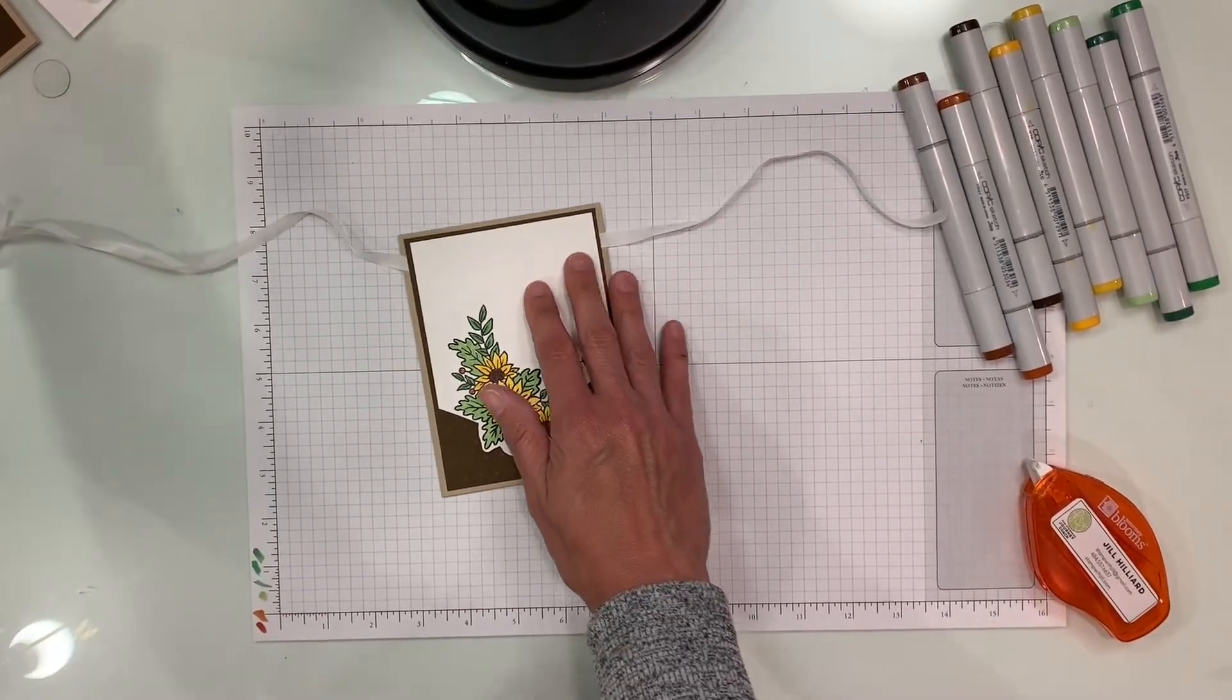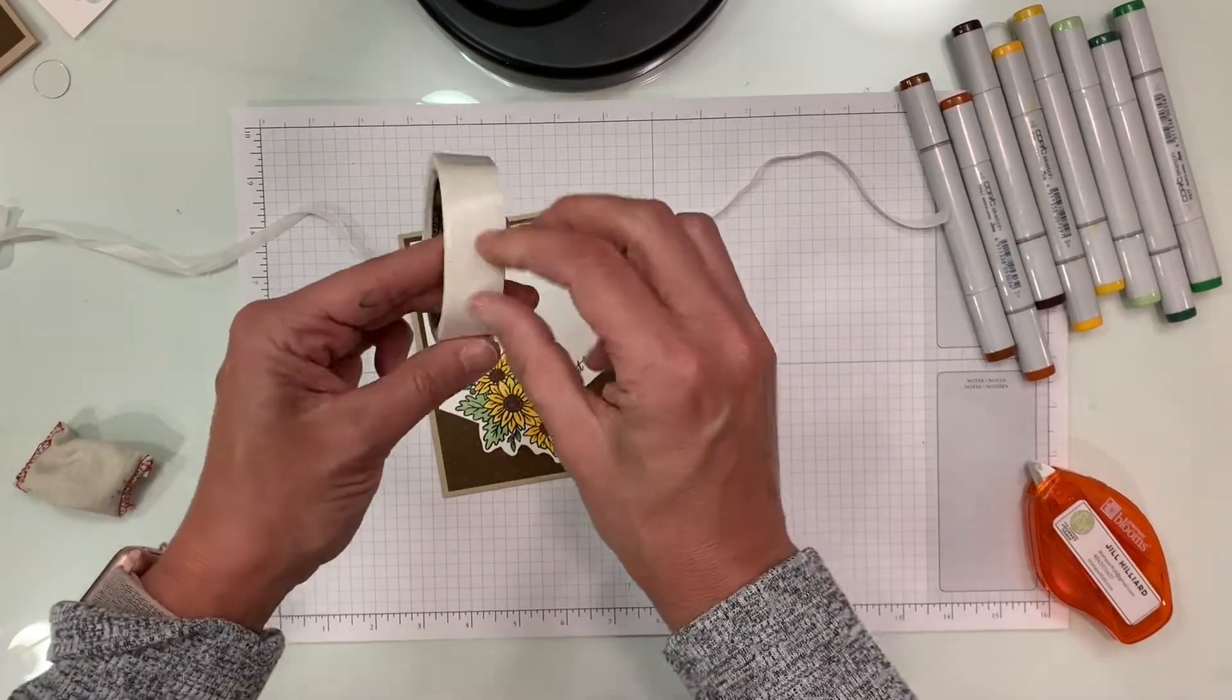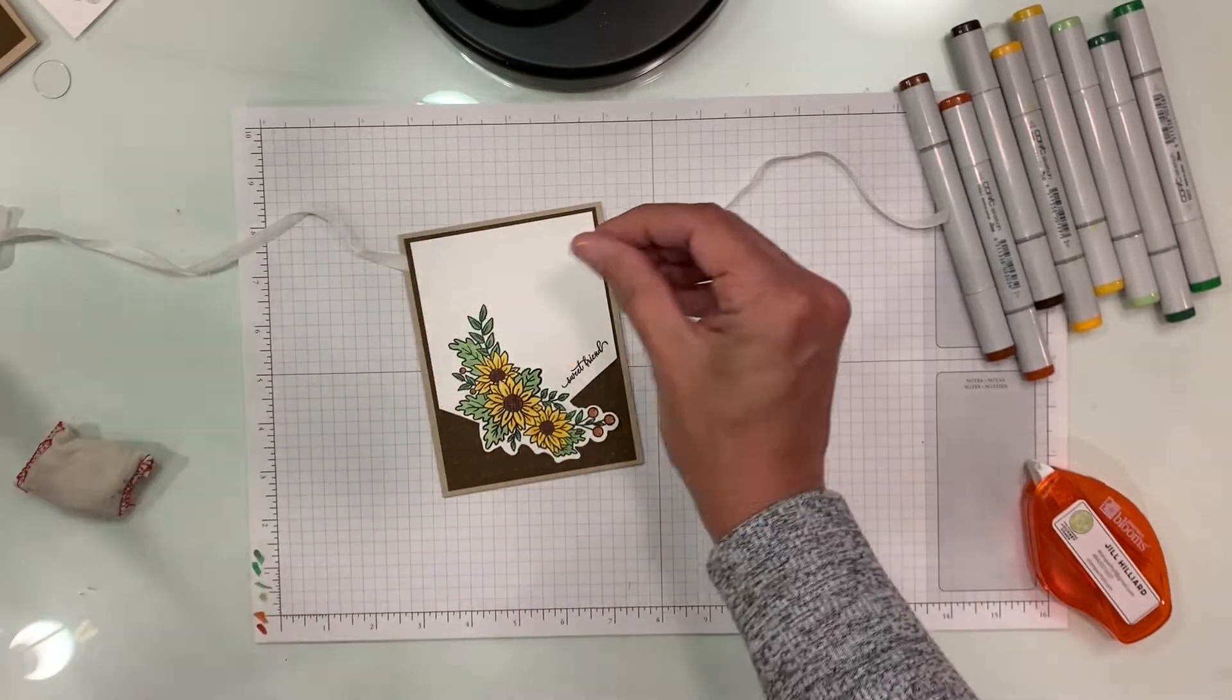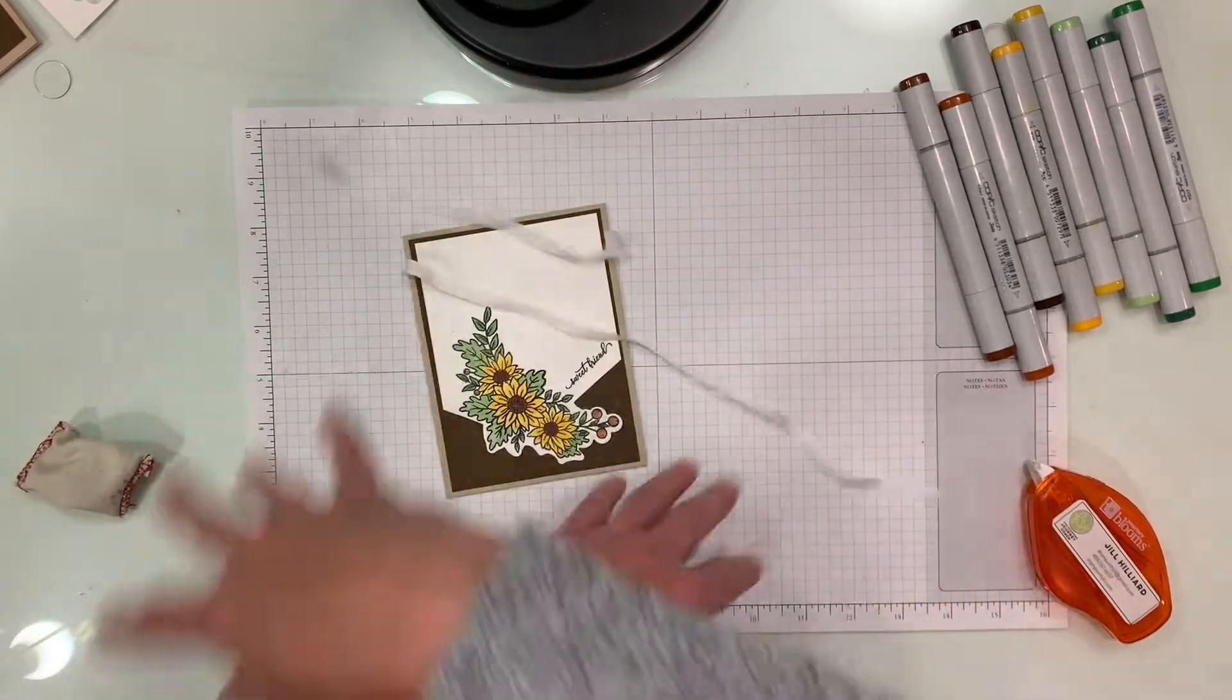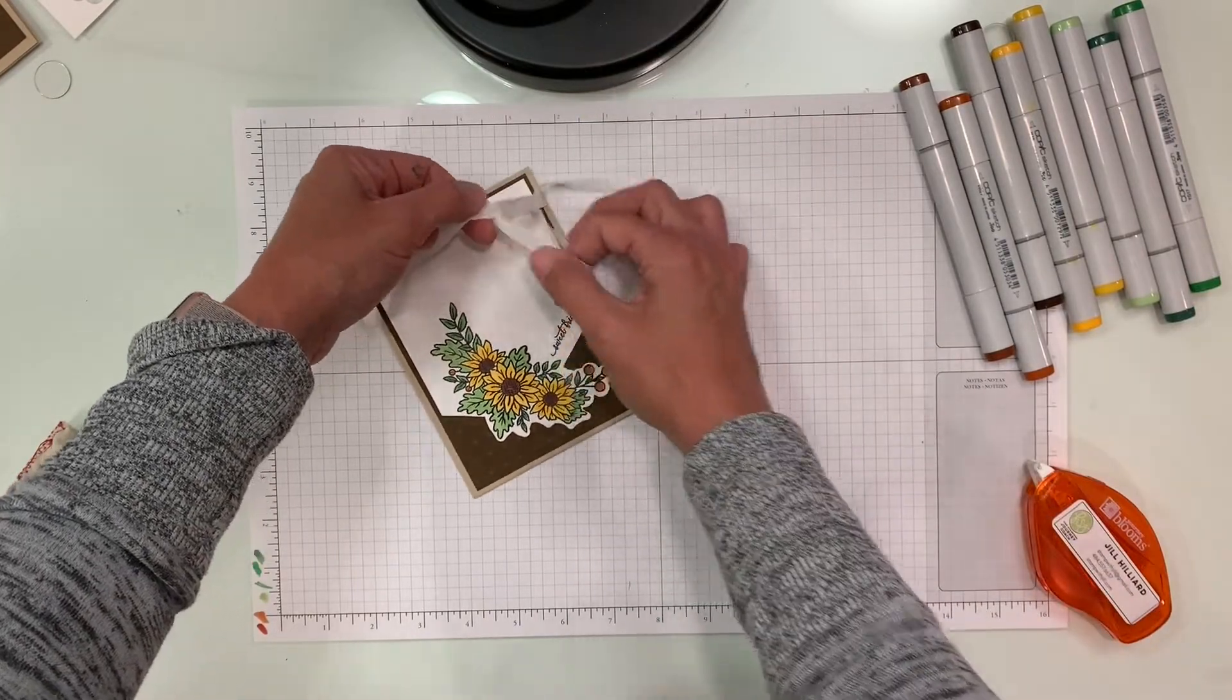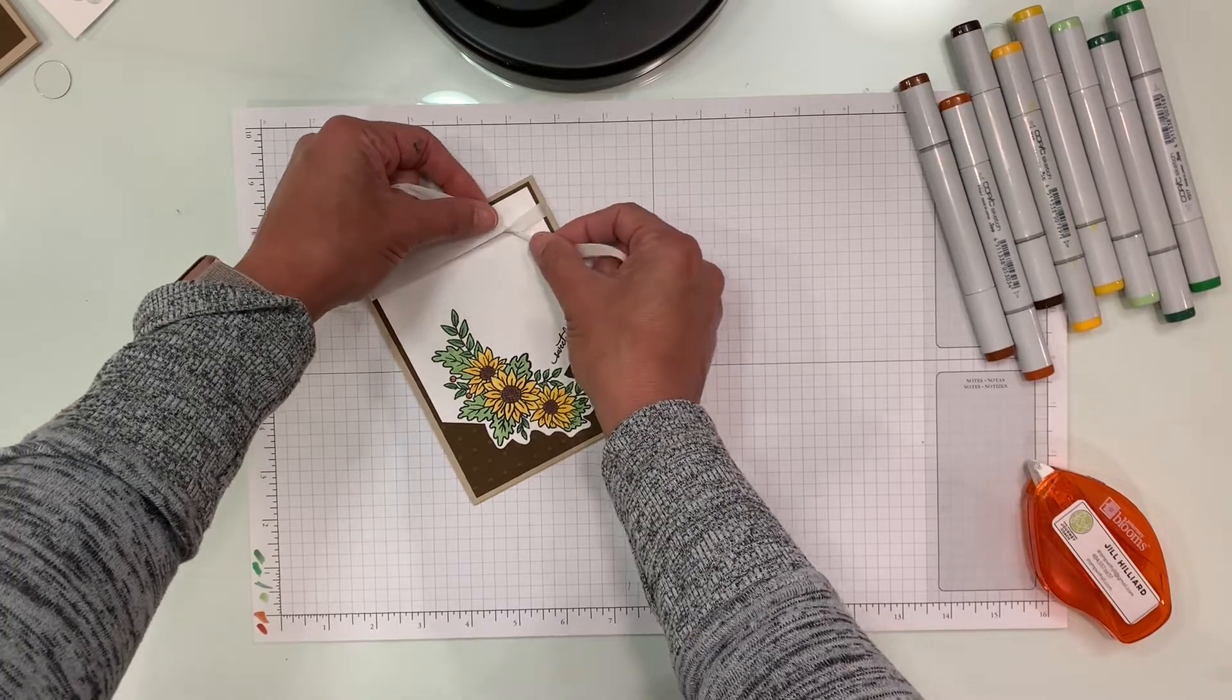All right, so now we're ready to tie the bow and add the pearls. What I use to tie the perfect bow in the perfect spot is a mini glue dot. I just take this off the roll here and I put it right where I want the bow to be, which is going to be right about there. Then I cut my ribbon a little bit longer. So what this does is it holds it in place. You're not fussing trying to tie a bow around a card that's wiggling.